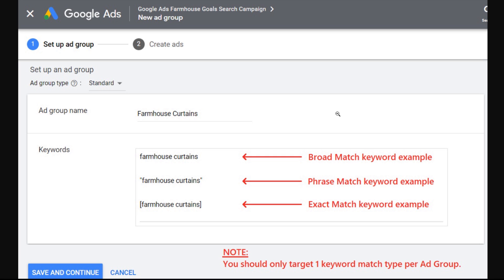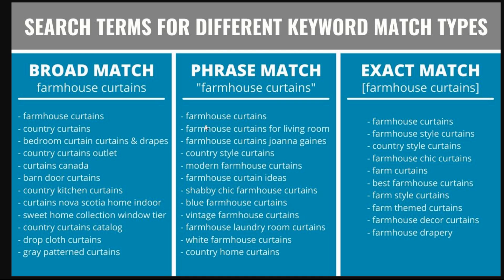I actually did a test where I targeted three different keyword match types in separate ad groups and ran them at different times to see what search terms came up. So: broad match — 'farmhouse curtains' with no annotations; phrase match — 'farmhouse curtains' with quotes; exact match — 'farmhouse curtains' with brackets.